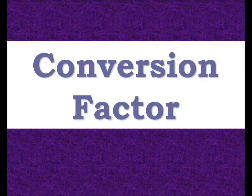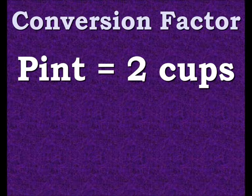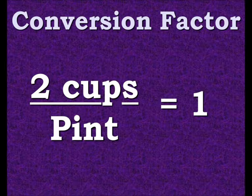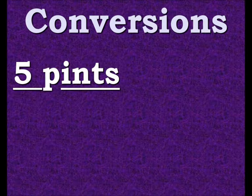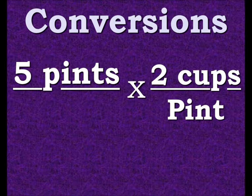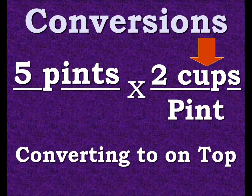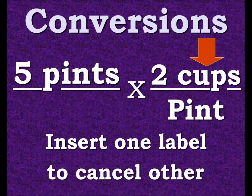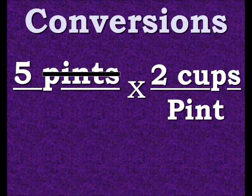Our first conversion factor is one pint equals two cups. We put that into a ratio that is equal to one. We're going to multiply that conversion factor into our five pints. Notice we have the cups on top because that's what we're converting to — we insert one label in an effort to cancel another label.